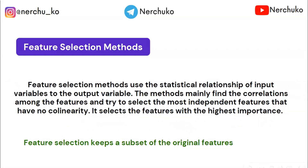Feature selection ensures that columns satisfy the multi-collinearity condition. If two columns are similar, we remove the duplicate column. It selects features with the highest importance — we calculate variance across columns and select those with highest variance. Feature selection keeps a subset of original features and creates a new dataset with lower dimensions containing the same features as the old dataset.